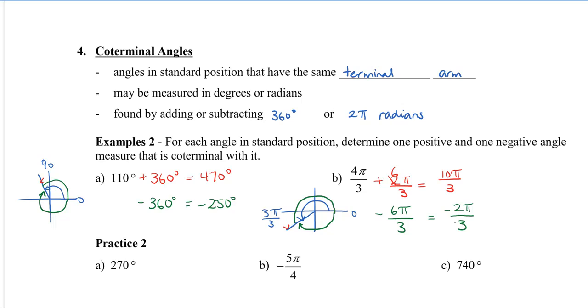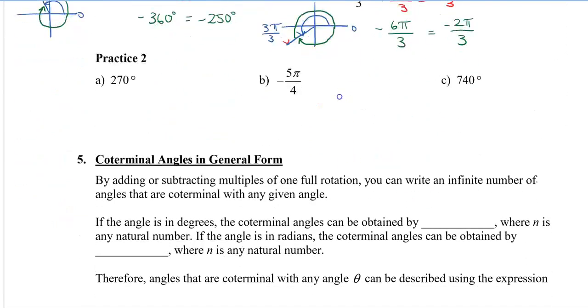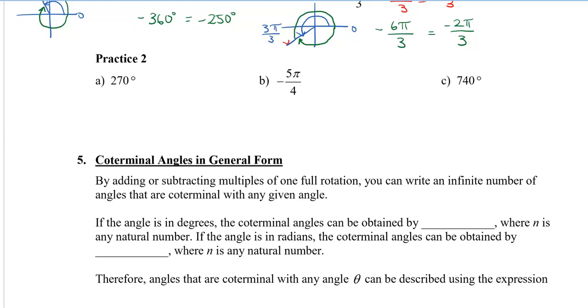All right, so let's take a look at what coterminal angles look like, generally, because we can actually keep adding 360, or keep subtracting 360, or 2π. So if we keep doing this, this will give us lots of full rotations. We can write it in an infinite number.